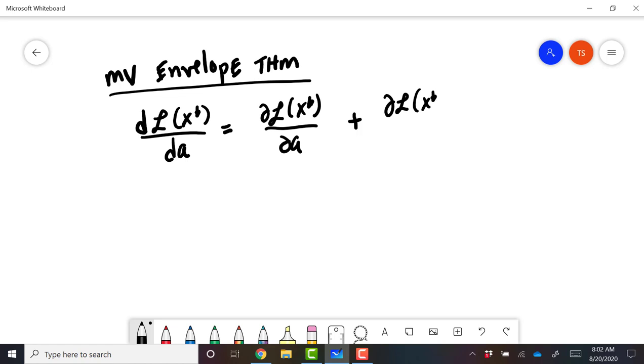right? Partial Lagrangian, partial x1 times partial x1 star partial A. We know this one is going to be equal to zero plus for every x star.